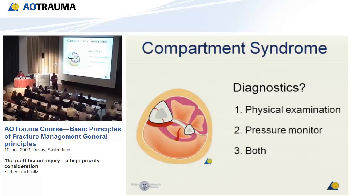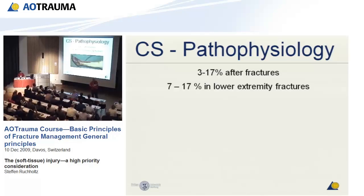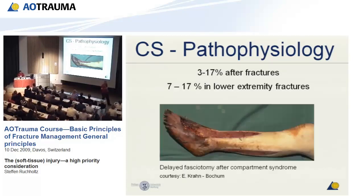Compartment syndromes may develop in the hand, forearm, upper arm, even the brain — intracranial pressure — the abdomen, thigh, and most often in the lower leg. About 17% of tibial fractures develop a compartment syndrome. Once you miss the right moment to open up the fascia, you will have very severe problems causing serious functional impairment. The fracture may heal if perfusion is restored, but this must always be a priority.